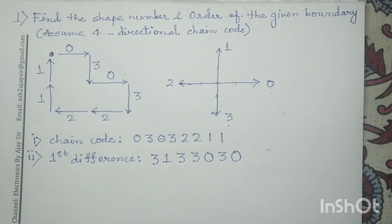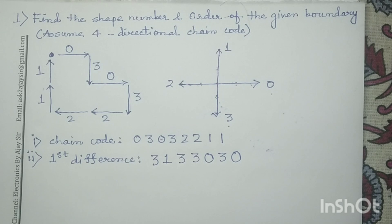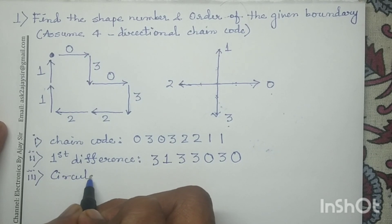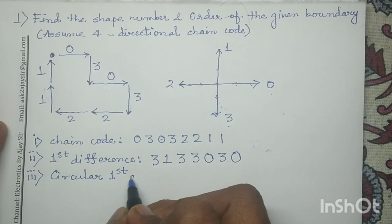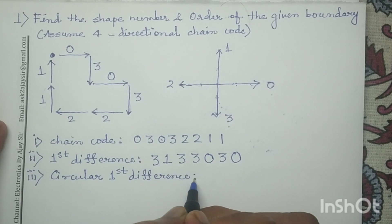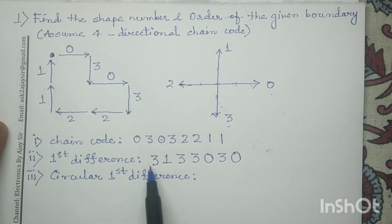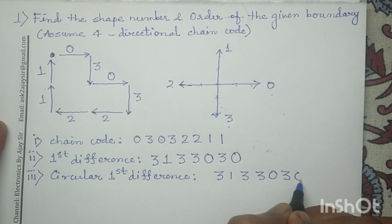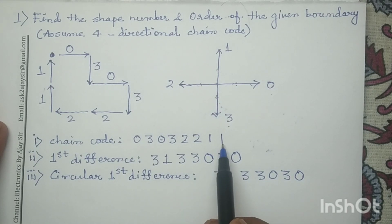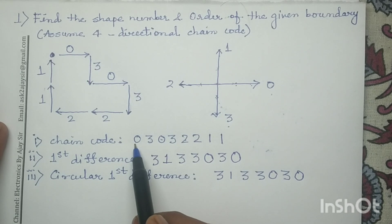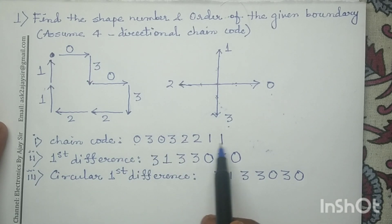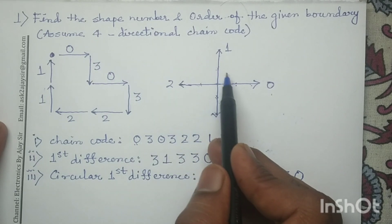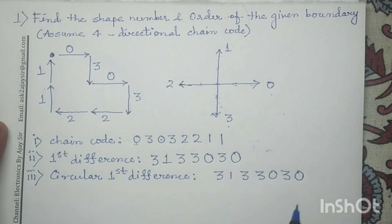After determining the first difference, next we will determine the circular first difference. To write it, we first write the first difference, followed by the difference between the last bit and the first bit of the chain code. The last bit is 1 and the starting bit is 0, so the difference from 1 to 0 in anticlockwise direction is 3.